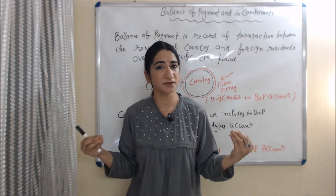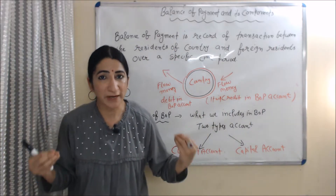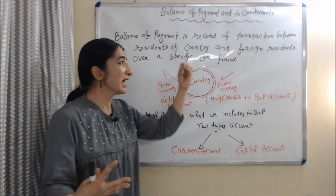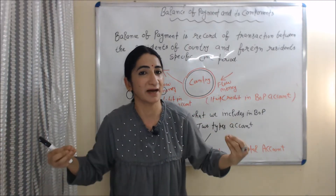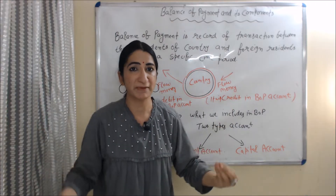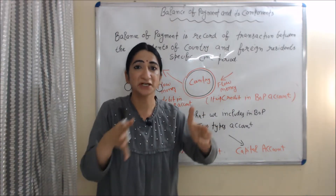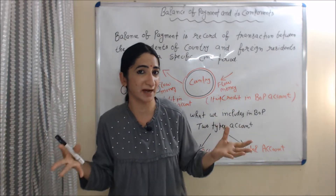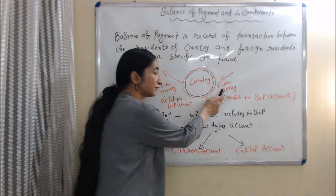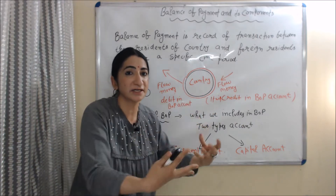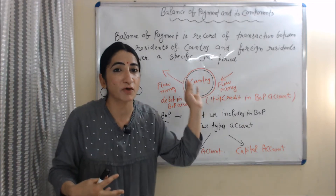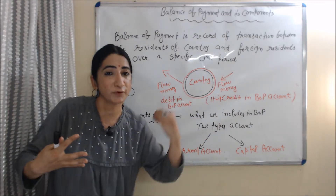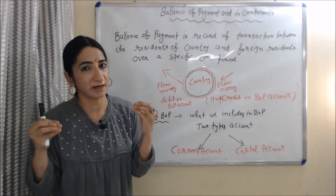What do you mean by balance of payment? Balance of payment is a record of transactions between residents of a country and foreign residents over a specific time period. Any transaction that flows money into a country will be credited in the balance of payment account. On the other hand, any transaction that flows money out from the country will be debited in the balance of payment account.